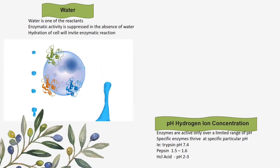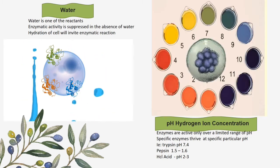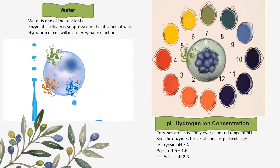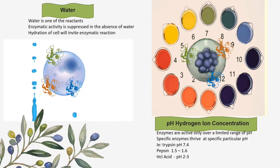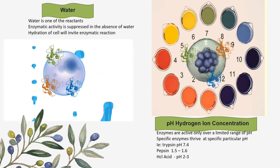The effect of pH, or hydrogen ion concentration, on enzymes. Enzymes are active only over a limited range of pH, and specific enzymes thrive at a specific particular pH — such as trypsin, which has a 7.4 pH level, pepsin having a 1.5 to 1.6 pH level, and hydrochloric acid having a 2 to 3 pH level. Any alteration in hydrogen ion concentration will have a drastic effect on the biochemical reaction of the enzyme.